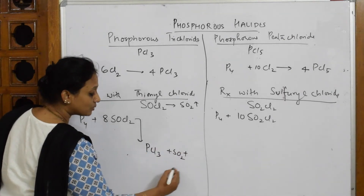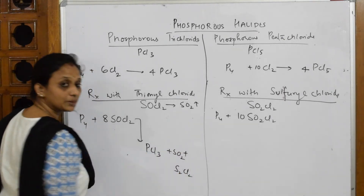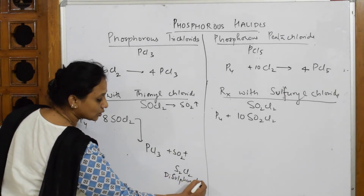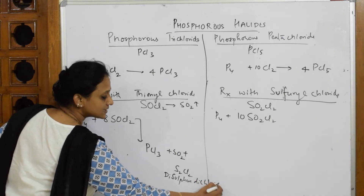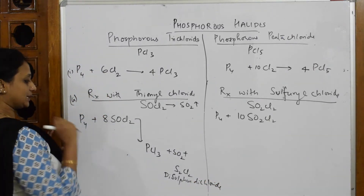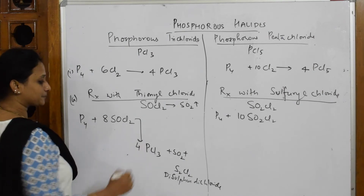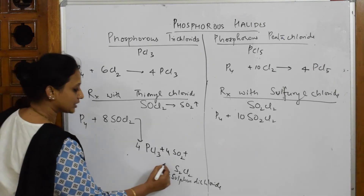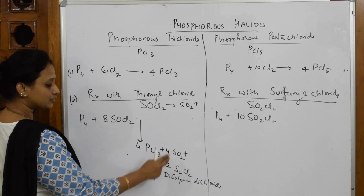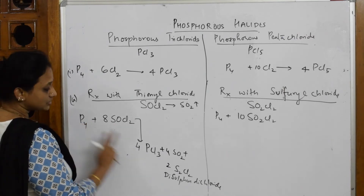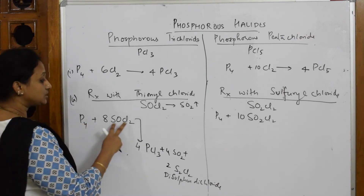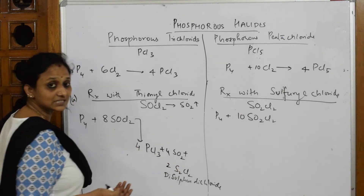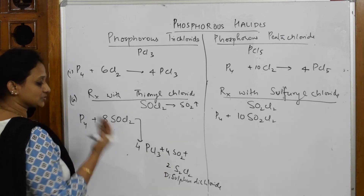Apart from SO2 and PCl3, you also get a compound called S2Cl2 — disulphur dichloride. Let us balance: P4 with 8 moles of SOCl2. Phosphorus is 4, so make 4 PCl3. Sulfur: already 4 on the left, so coefficient 2 for S2Cl2 gives 4 sulfurs — balanced. Oxygens: 8 on the left, 8 SO2 on the right — balanced. Chlorines: 8×2 = 16; 4×3 + 2×2 = 12 + 4 = 16 — balanced.